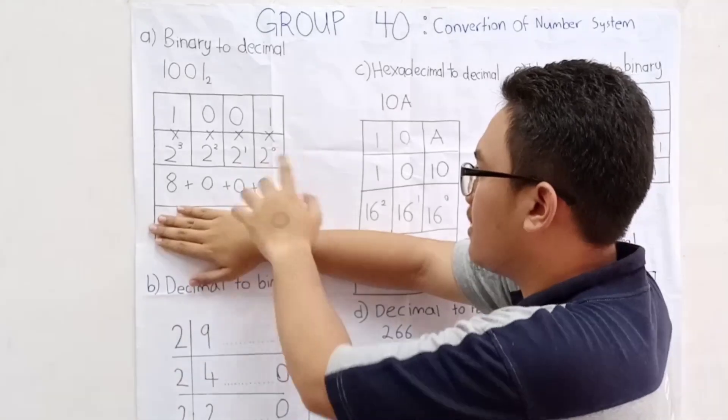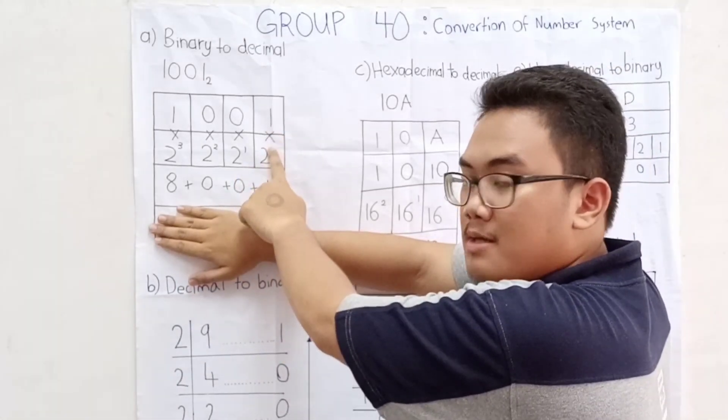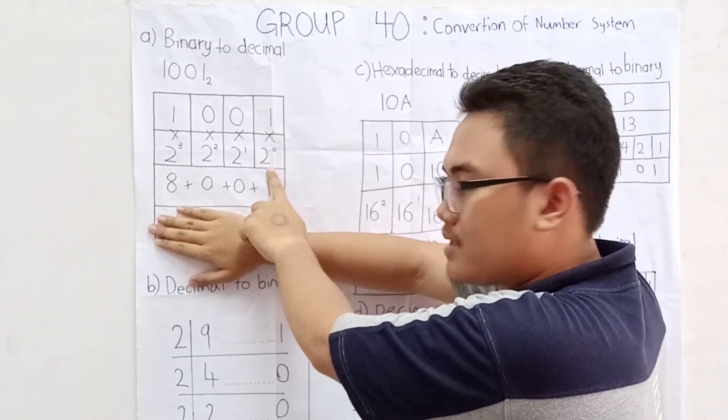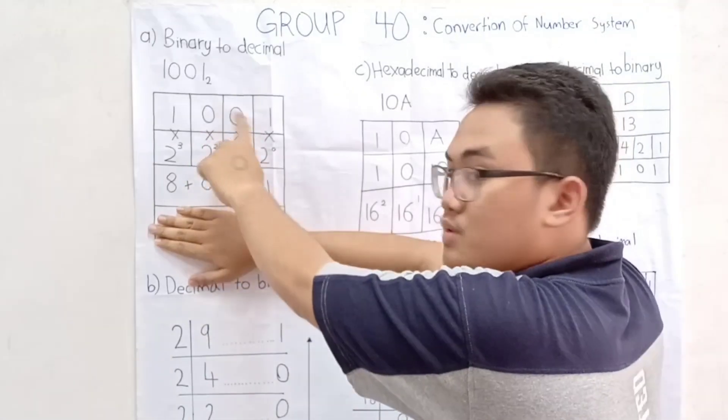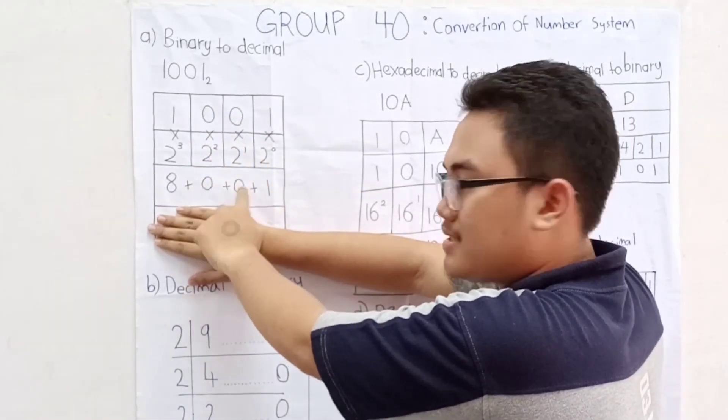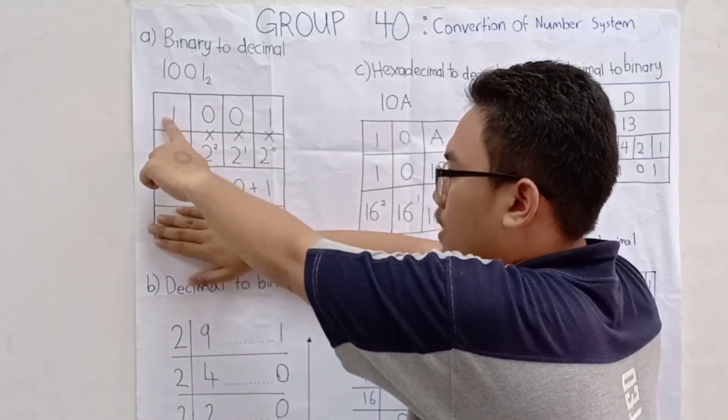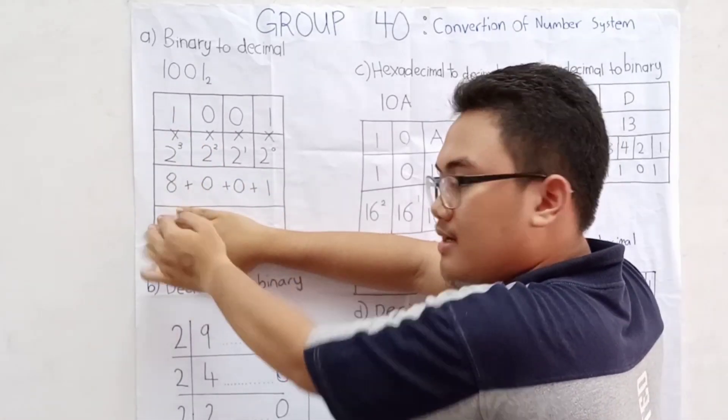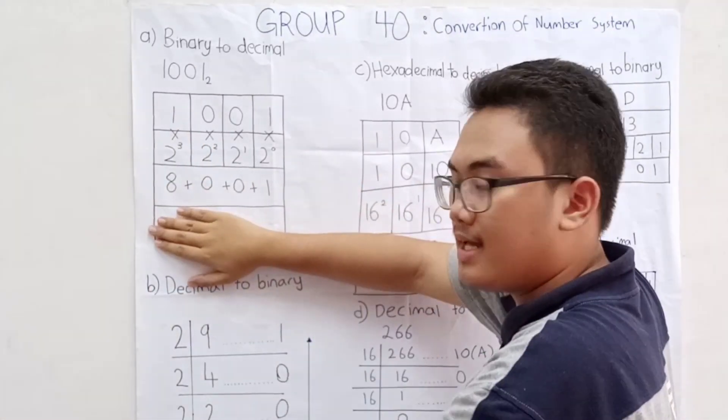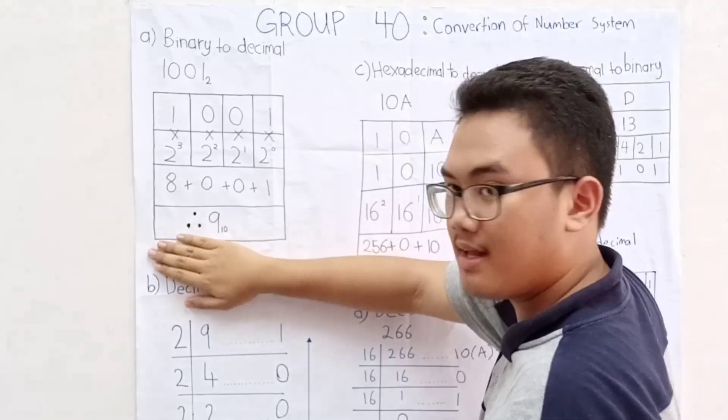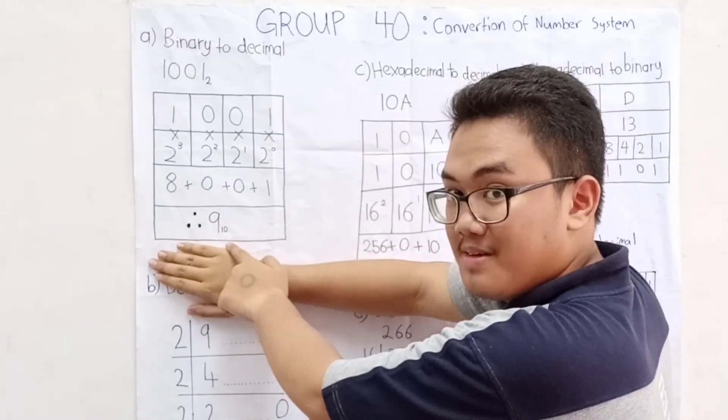We get 1. Then, we multiply by 2, the power of 0 is 1. Then, the 0, the power of 1 is 0. And 1, the power of 3 is 8. Then, we sum them, and we get 8 plus 0 plus 0 plus 1 equals 9, base 10.